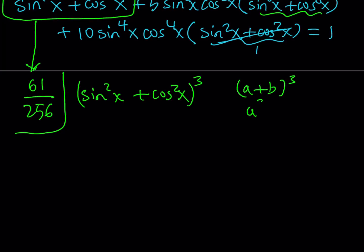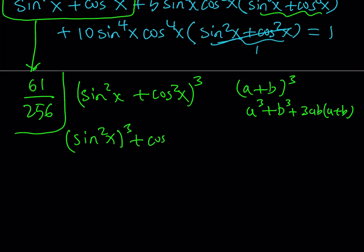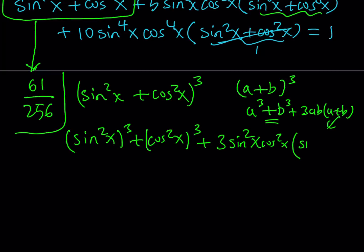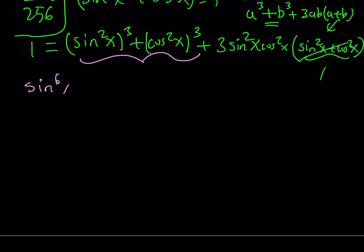How do you cube a plus b? I usually cube it as a cubed plus b cubed plus 3ab multiplied by a plus b. So I get sine squared x to the 3rd plus cosine squared x to the 3rd — that's my a cubed plus b cubed — plus 3 times sine squared x cosine squared x multiplied by sine squared x plus cosine squared x, which is 1. Since the original expression equals 1, the cube also equals 1, giving us sine x to the 6th plus cosine x to the 6th plus 3 sine squared x cosine squared x equals 1.